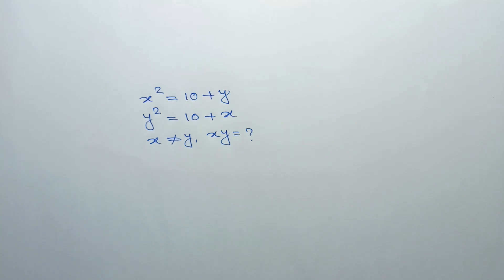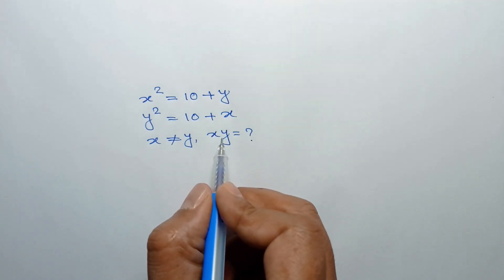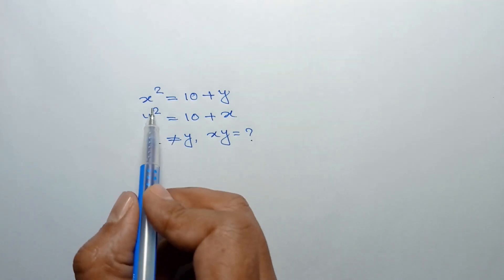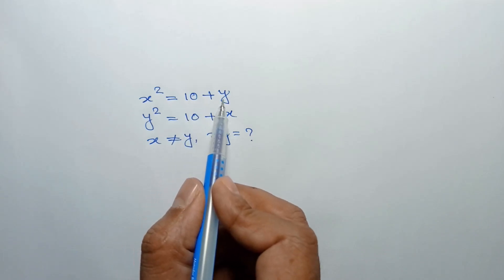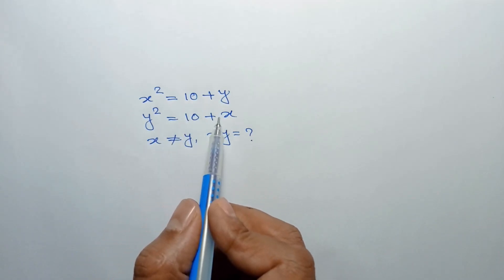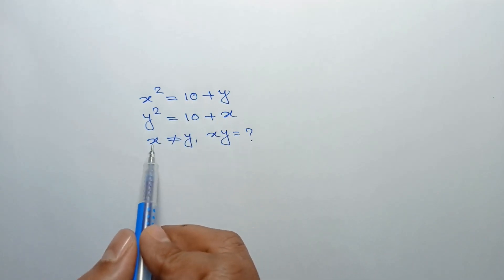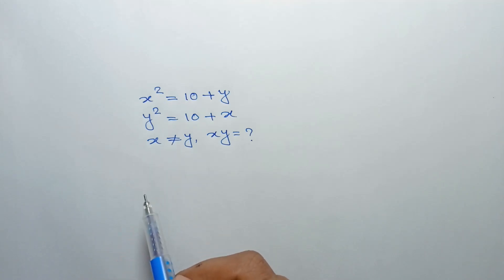Hi everyone. In this video I am going to show how to find the value of xy, where x squared is equal to 10 plus y, y squared is equal to 10 plus x, and x is not equal to y.